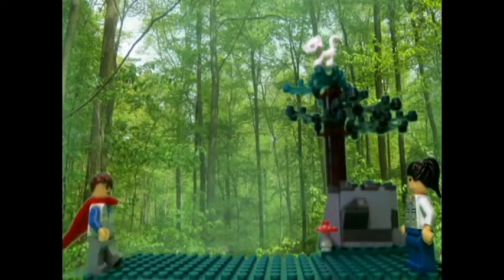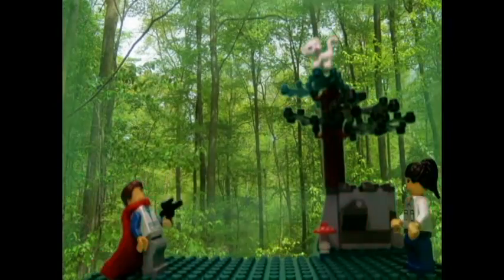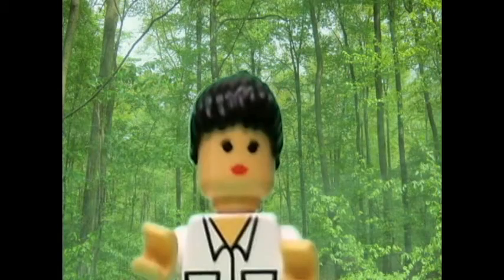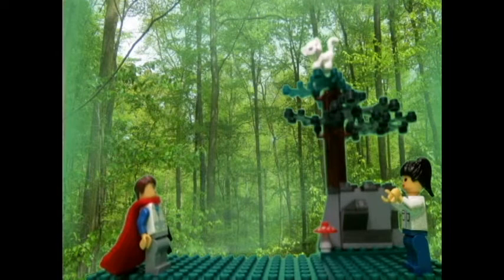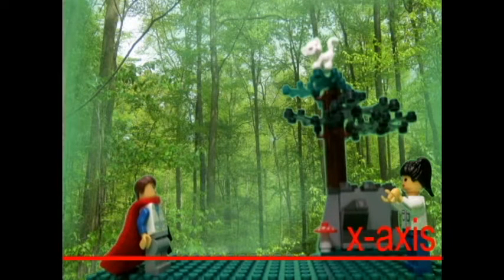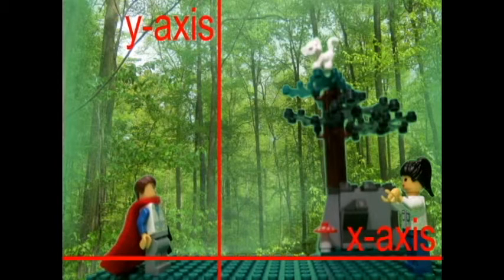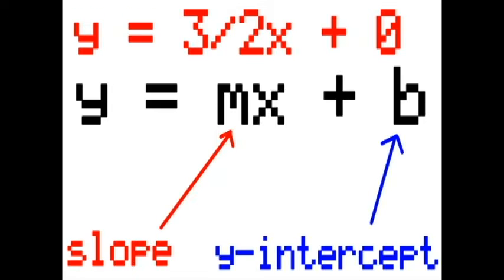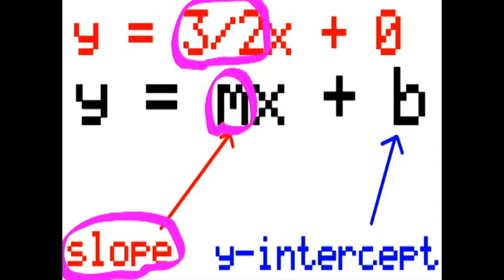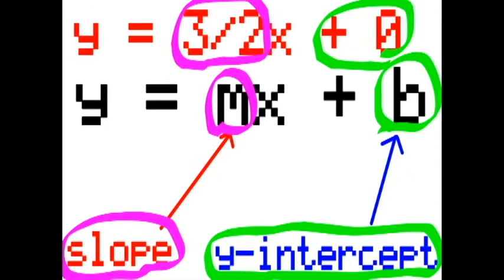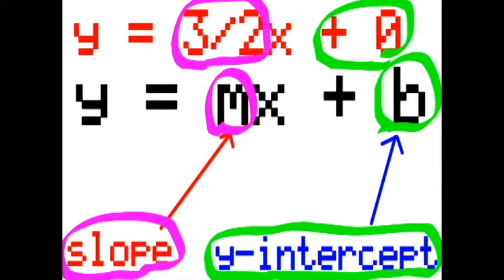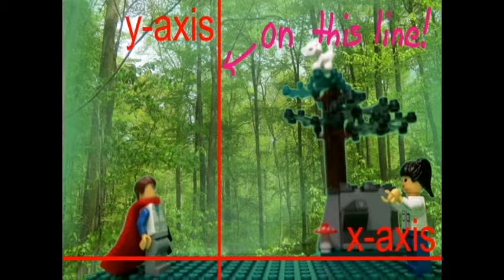At the scene, Math Man tries to take a shortcut. When that doesn't work, he quickly finds the x-axis and the y-axis. Math Man compares the equation from his computer to the slope-intercept formula. He can clearly see that the slope is 3 over 2 and the y-intercept is zero. Since Math Man knows that you always begin with a y-intercept, he begins at a height of zero.